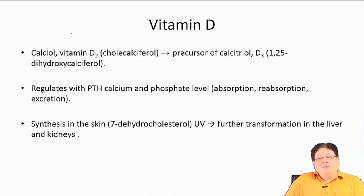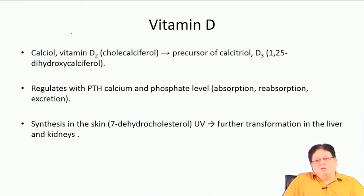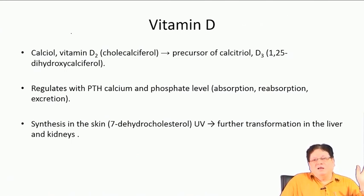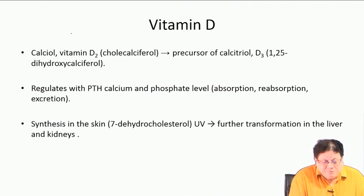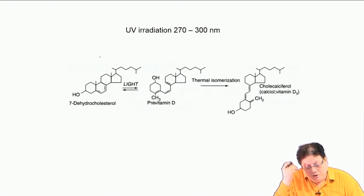Next is vitamin D. Vitamin D is not a coenzyme; it is actually a hormone. A hormone is secreted by glands, transmitted through the bloodstream, binds to protein receptors in target tissues, and triggers a cascade of reactions. So vitamin D is not a cofactor or precursor of a coenzyme.